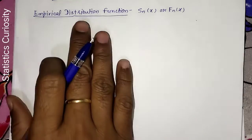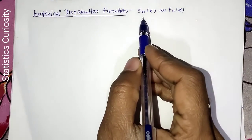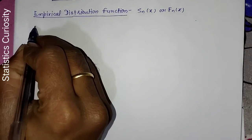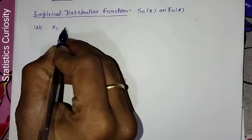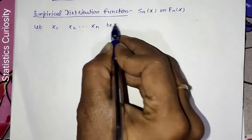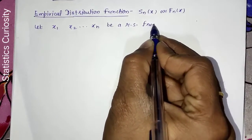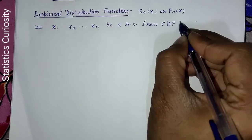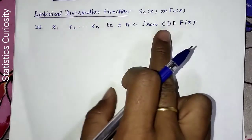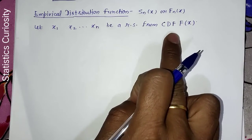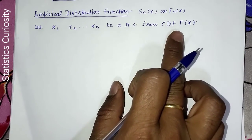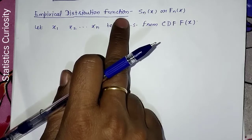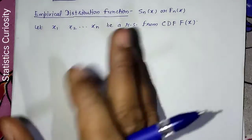The empirical distribution function is basically denoted by SNx or FNx. To understand it, first assume we have a random sample x1, x2, up to xn from any distribution with CDF capital F(x). CDF stands for cumulative distribution function. In simple terms, the CDF is the distribution function for population data, while the empirical distribution function is the distribution function for sample data or observed data.